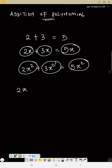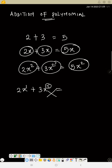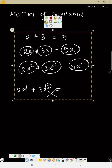But 2x plus 3x squared — you cannot add them together. Why? The power on x here is 1, and the power on x here is 2. If they have different powers, you cannot add them together. You can only add them if they have the same powers.